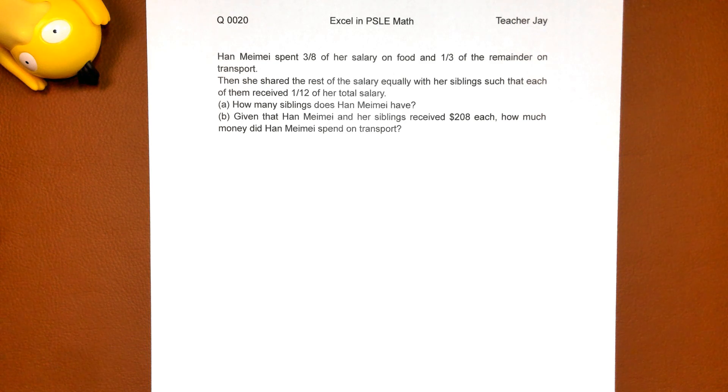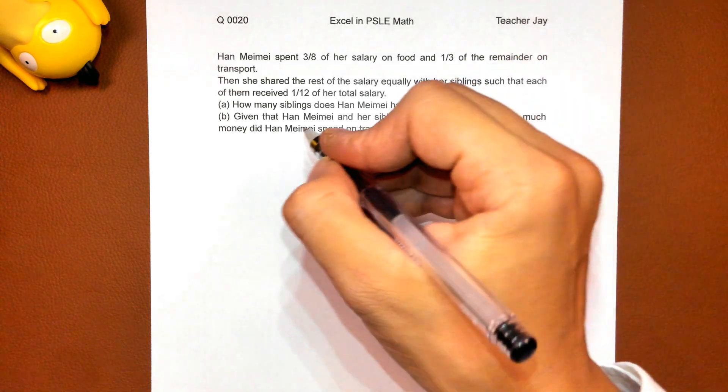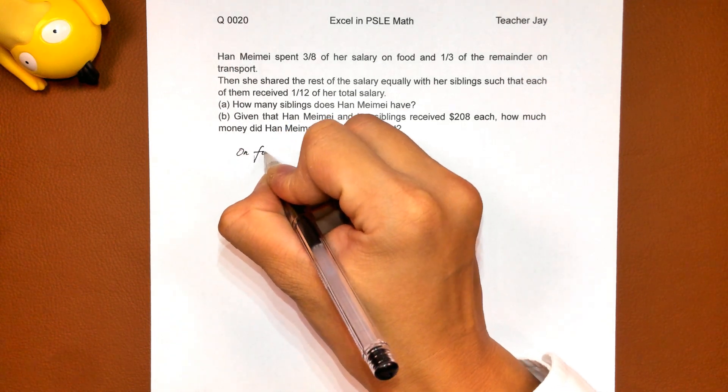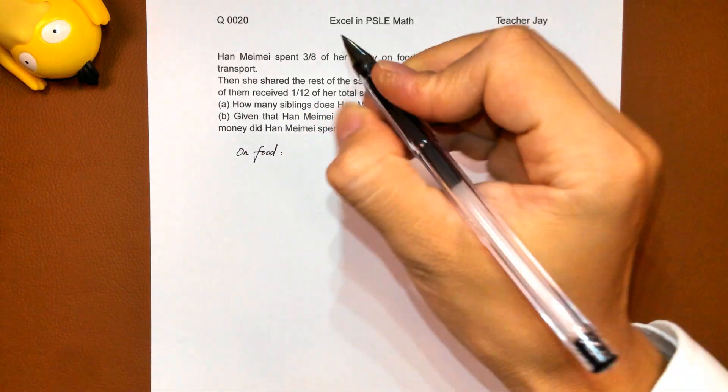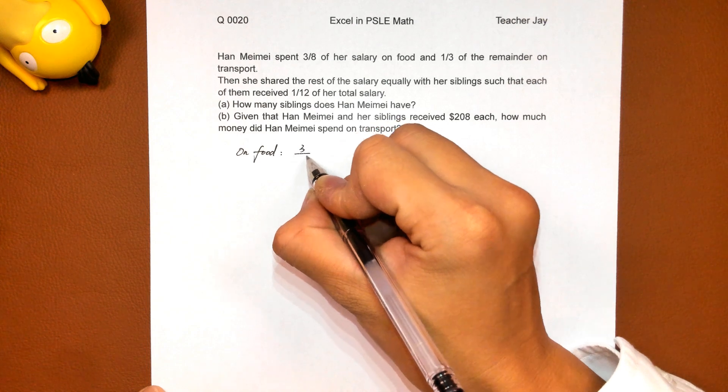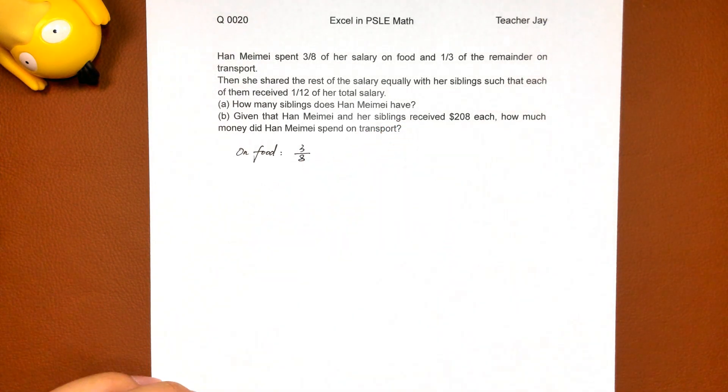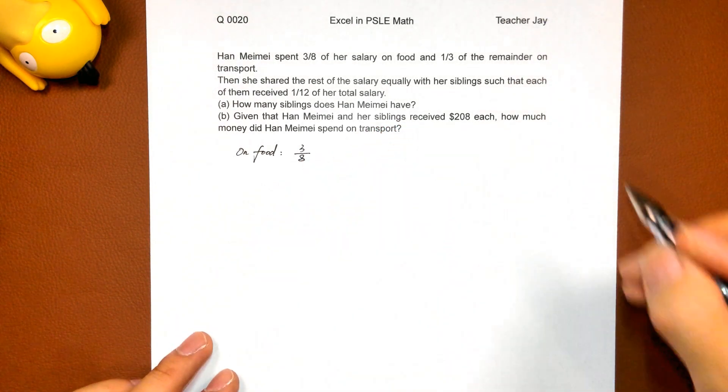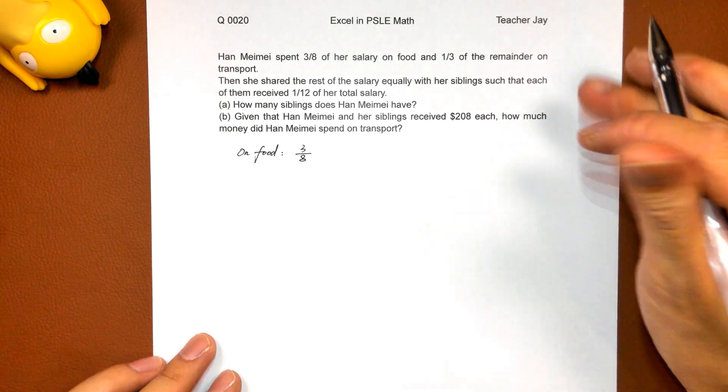Han Mei may spend three eighths of her salary on food. Three eighths on food. And one third of the remainder on transport.